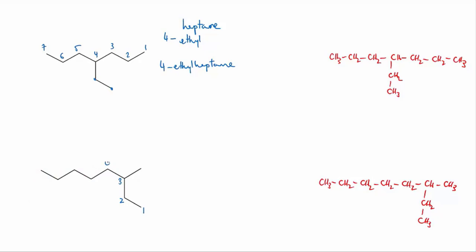There's one substituent of one carbon, so that's a methyl. And when we number the main chain we'll start at this end because the branch is closer to that end and we'll find that the branch is on the third carbon. So the final name for this molecule is 3-methyloctane.